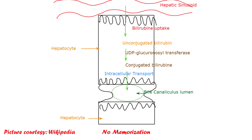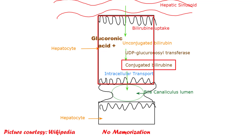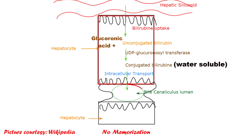This unconjugated bilirubin will be taken up by hepatocytes. In the hepatocyte, unconjugated bilirubin will bind with glucuronic acid with the help of the UDP-glucuronosyltransferase enzyme — then it is called conjugated bilirubin. This conjugated bilirubin is water soluble and hence can pass through the urine. It will then enter the biliary system through intracellular transport, which is important to remember because pathologies are related to this transport.